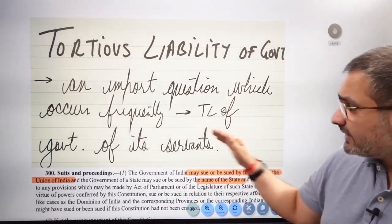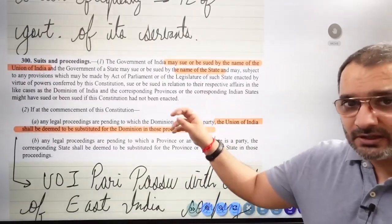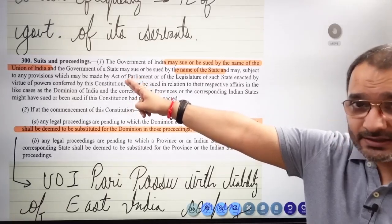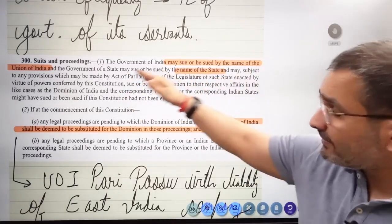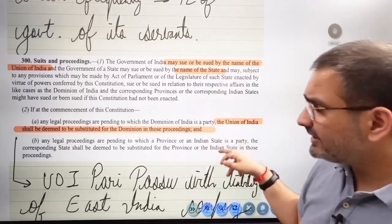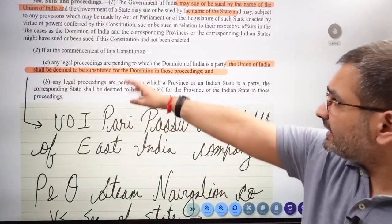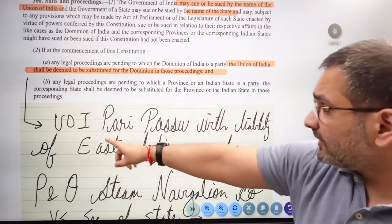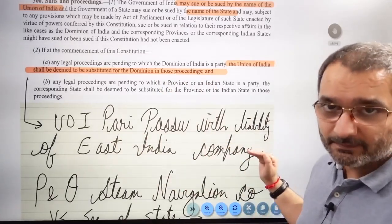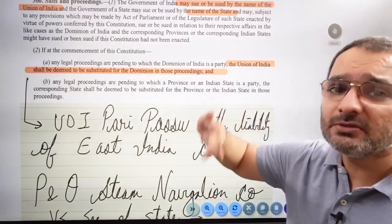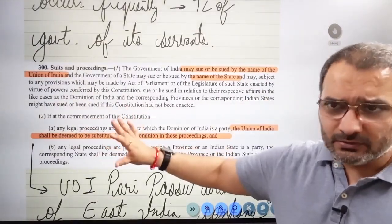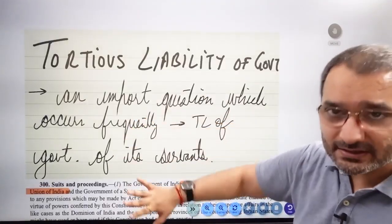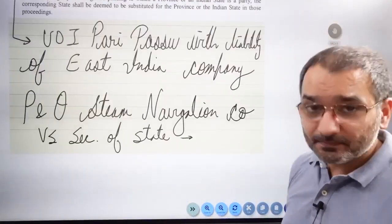An important question which occurs frequently is the tortious liability of government and its servants. As soon as you begin the answer, mention Article 300 on suits and proceedings. Do mention the title of the article because that will tell the examiner that you know a lot. The Government of India may sue or be sued by the name of the Union of India, and the state government will be sued by the name of the state. Otherwise it doesn't make any sense to straightaway jump into Article 300.